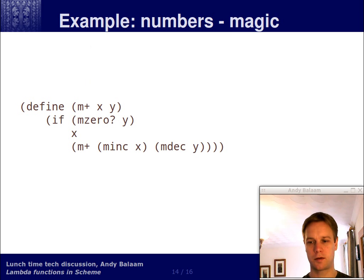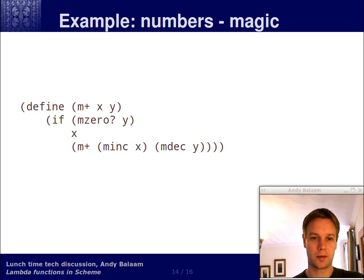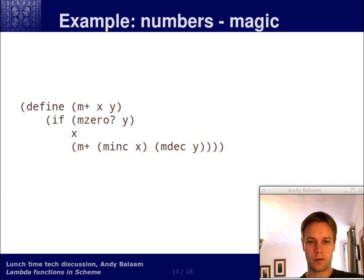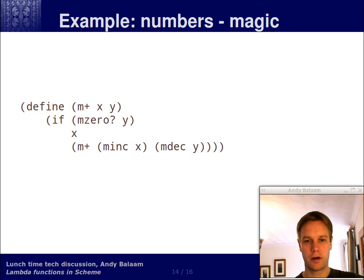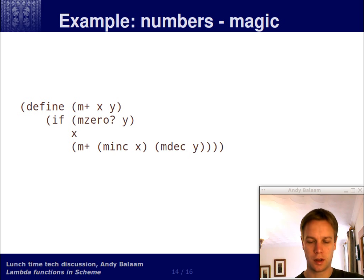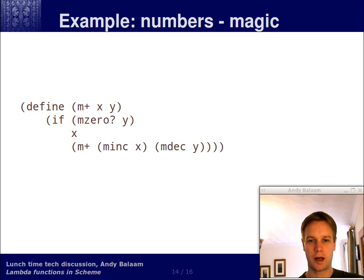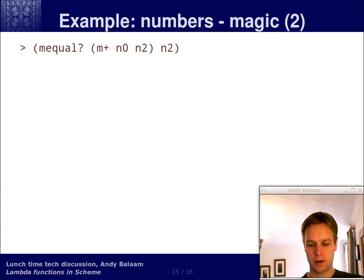So that's how miquel works. And finally, how does mplus work? This function doesn't need to use our special numbers at all — we could use ordinary numbers for this. Basically, one way of defining addition is: if y is 0, the answer is x. Otherwise, return the result of adding x increased by 1 and y decreased by 1. Obviously this only works for positive integers, which is all we've defined. But basically, if you add 1 to x and take 1 off y and call plus again, eventually y is going to be 0 and x is going to be the answer. And that's all there is to it.